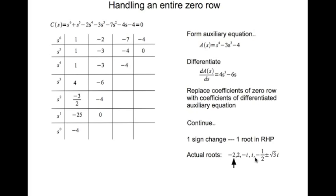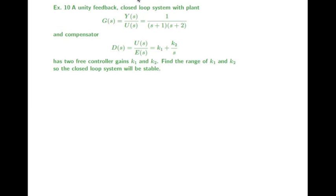I solved this equation using MATLAB. The roots are: -1 ± (1/2 ± √3·i), which are stable since the real parts are negative; ±i, which are marginally stable — that's why we ended up with one row equal to zero, because a complex pair lies on the imaginary axis; a negative real root (stable); and a positive real root, which is unstable.